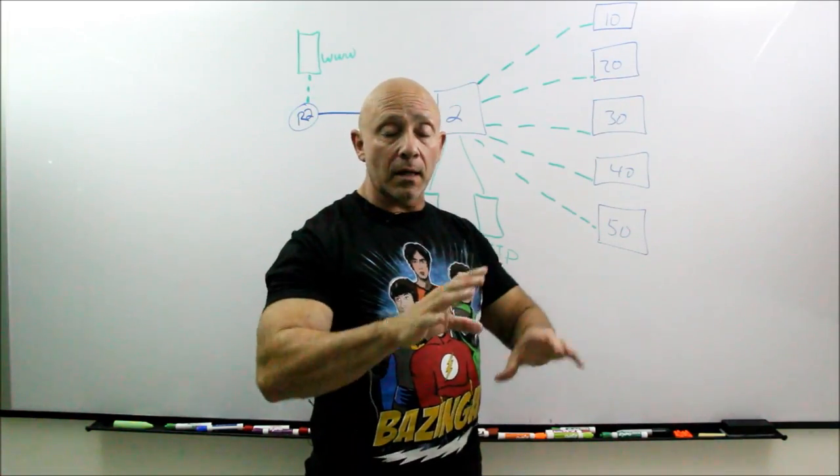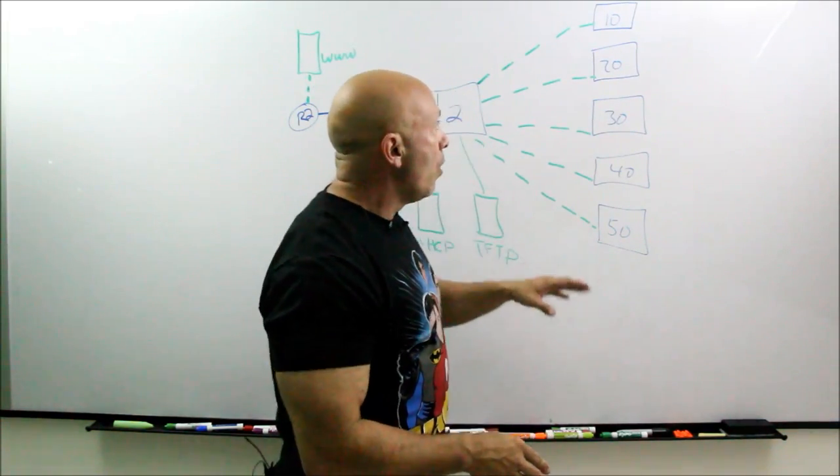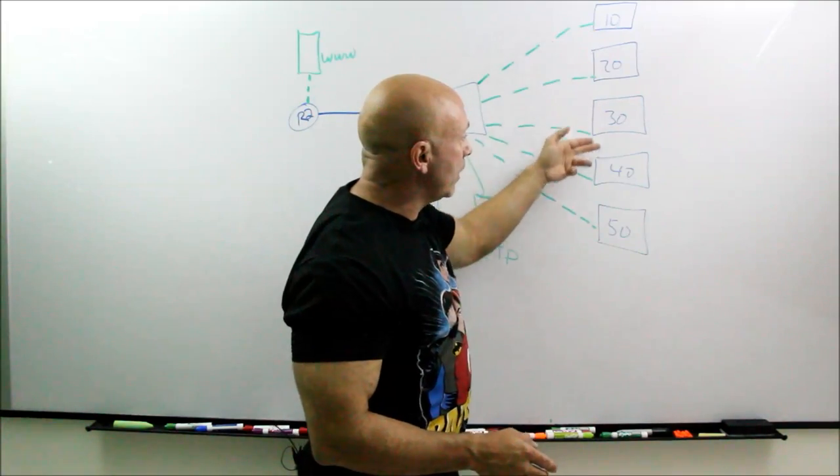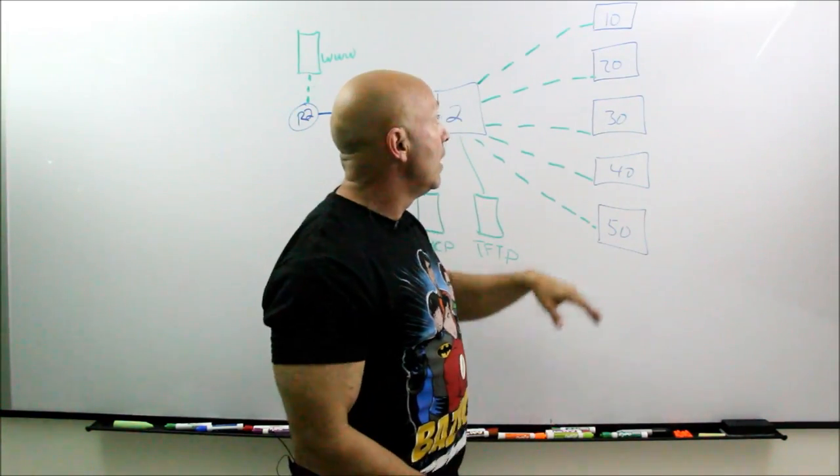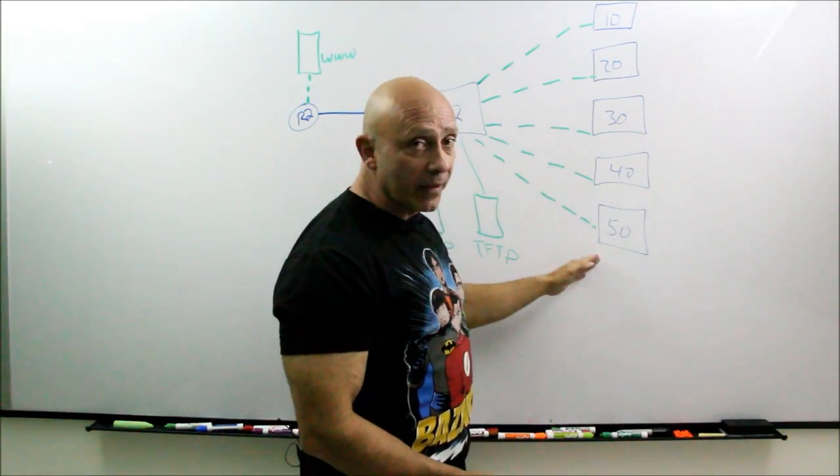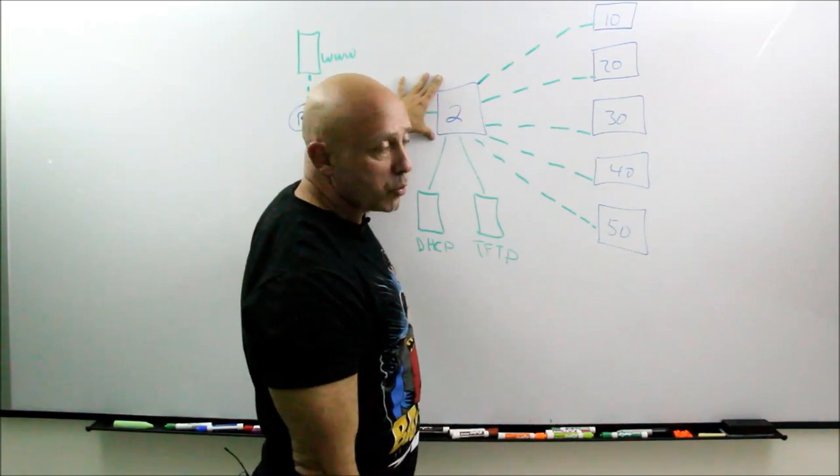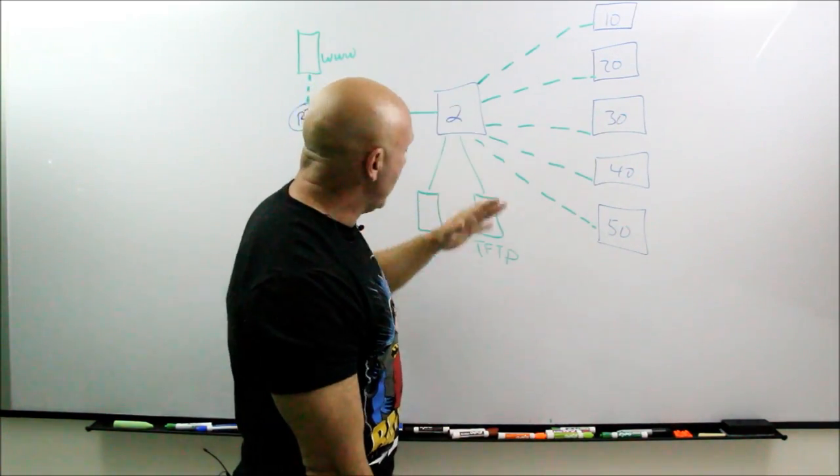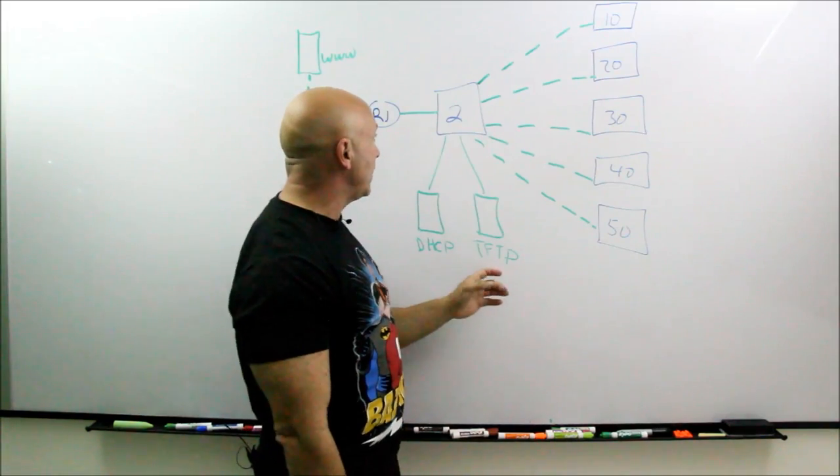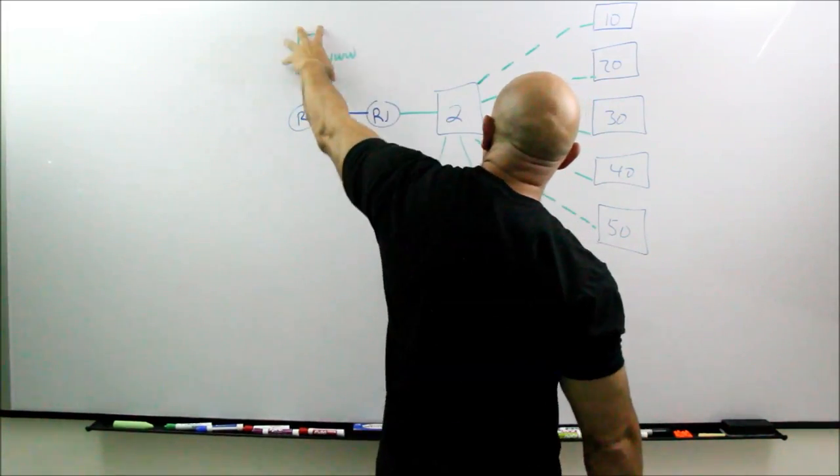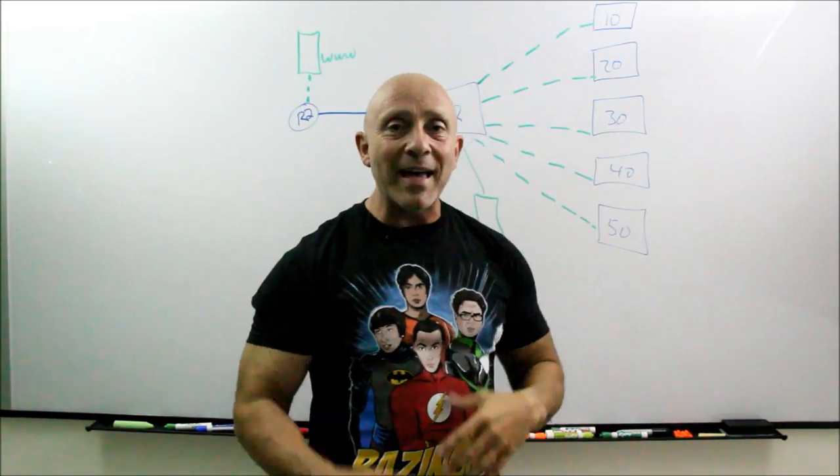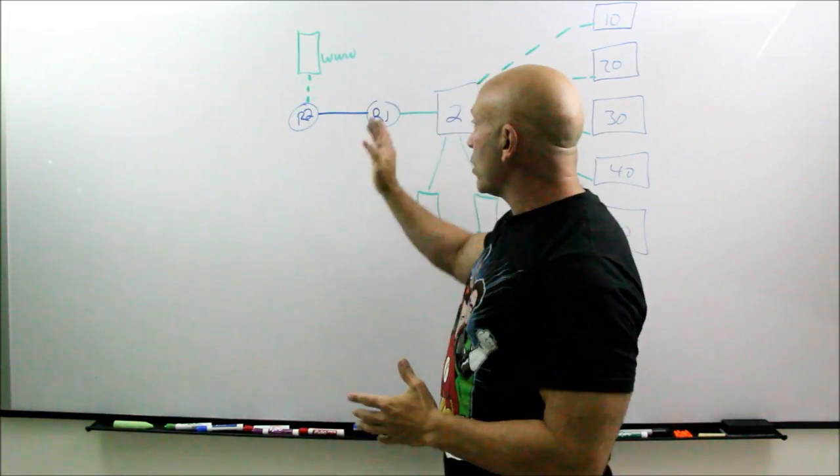When we start actually going into the Cisco Packet Tracer, what we have here are five switches: VLAN 10, 20, 30, 40, and 50. Over here we have a core switch which is going to be VLAN 2, and you can see you have a DHCP server and TFTP. You have two routers and one external web server. That's what the lab is going to consist of.